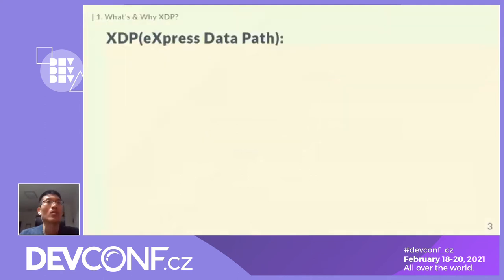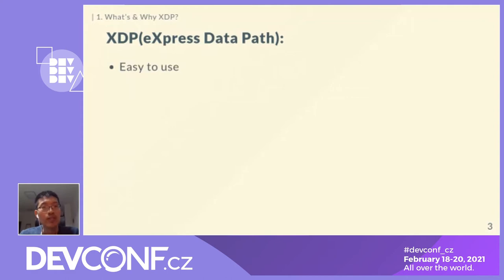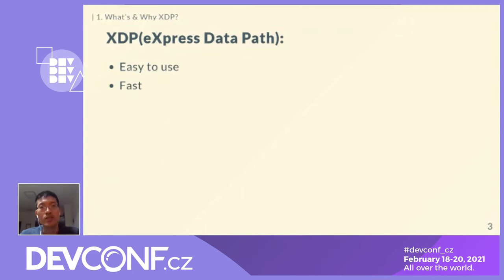What is XDP and why do we use it? XDP is eXpress Data Path — a network feature based on BPF. It's very easy to use because we can compile it once and load it on multiple kernels without recompiling. It's also very fast: we can operate on packets before they've been converted to SKB and go through the whole network stack.